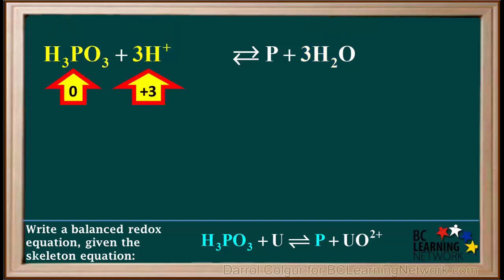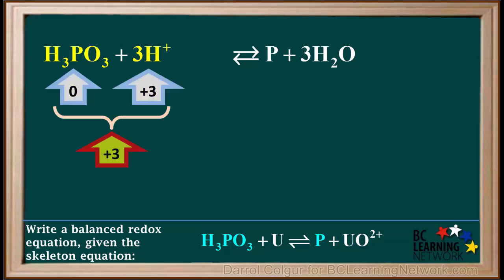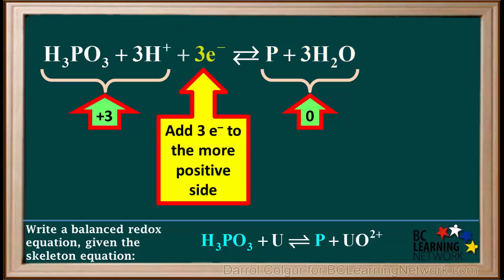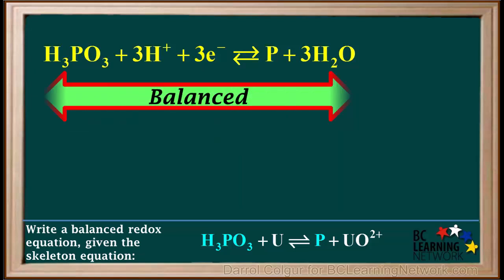The next step is to balance charge. On the left, we have a total ionic charge of zero plus three, which adds up to positive three. On the right side, both P and 3H2O have a charge of zero, so the total charge on the right side is zero. To balance charge, we add three electrons to the more positive side, the left side. This half-reaction is now balanced.